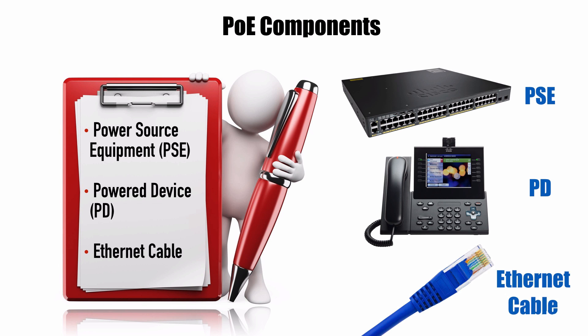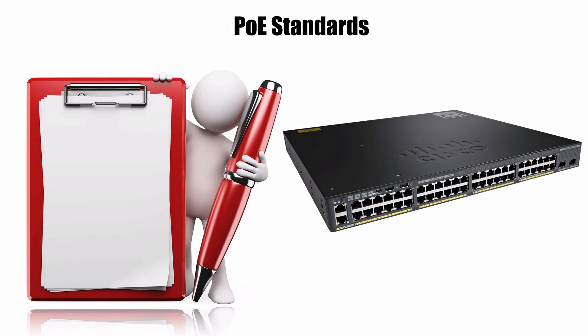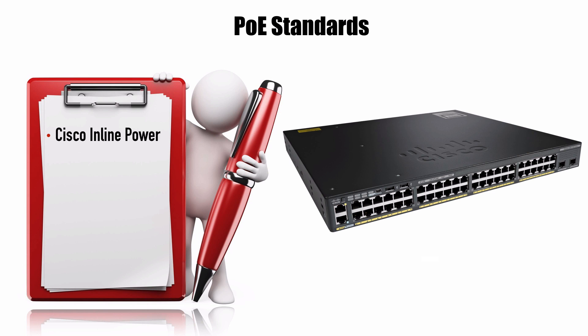Over the years there have been different Power Over Ethernet standards. When I first worked with Power Over Ethernet, it was using Cisco's proprietary Cisco Inline Power, back around the year 2000–2001, and it provided 7.7 watts of power, which was plenty to support the Cisco IP phones available at that time. Then around 2003, the IEEE introduced 802.3af, which gave us 15.4 watts of power — exactly double the Cisco proprietary value of 7.7 watts.